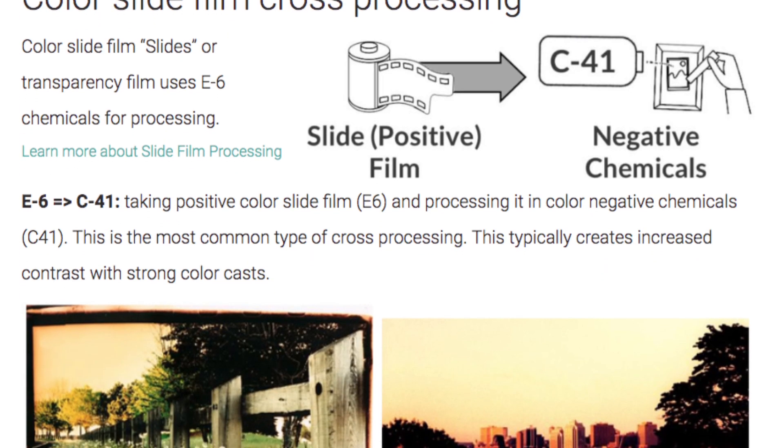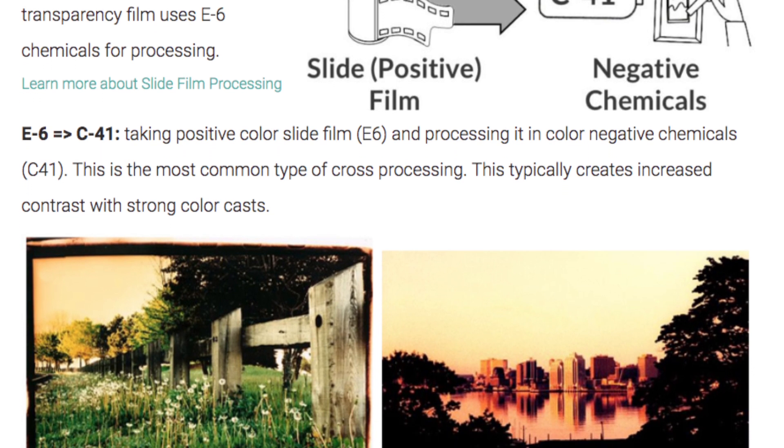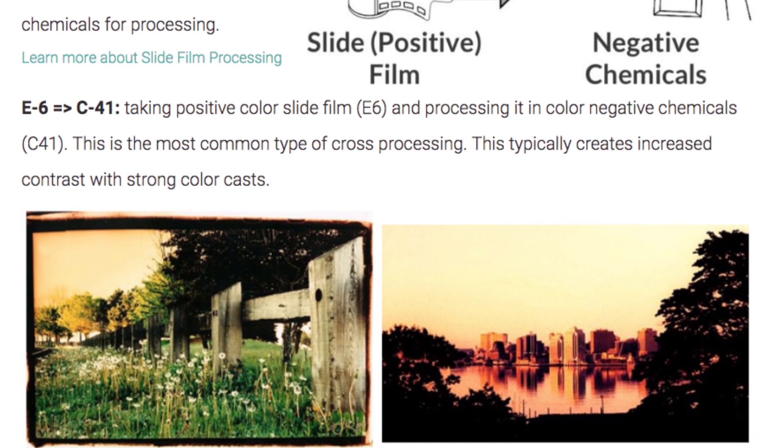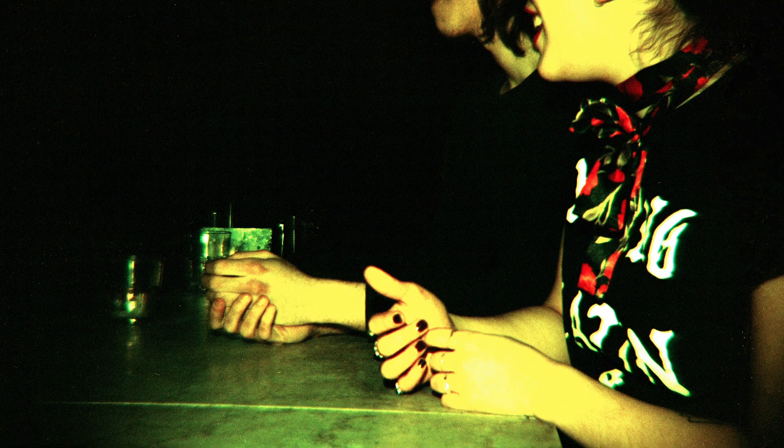You can send E6 slide film through the normal C41 color negative process and it will give you a negative version of your slide film, but with wild color shifts and really crazy results. So if you're looking for normal results from your slide film, you don't want to cross process your film. Slide film is something you're going to pay more of a premium for — the film costs a little more, the developing costs a little more, and it's harder to find labs that do the E6 chemical process.